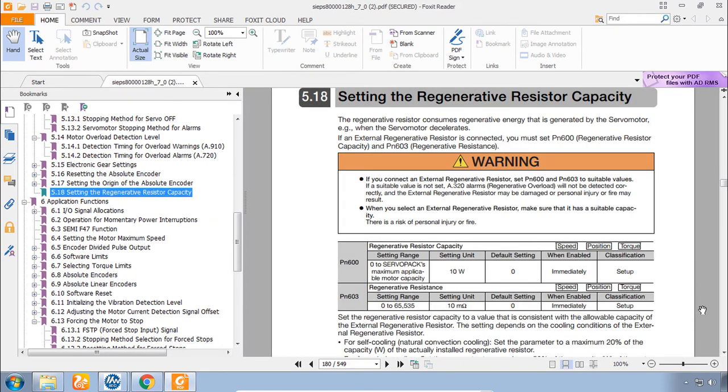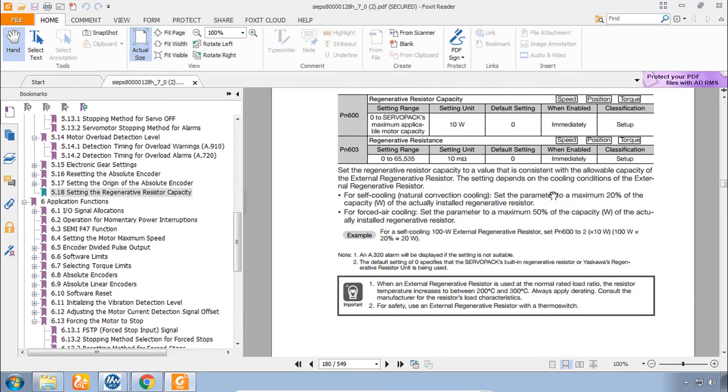And in the manual that is section 5.18, Regenerative Resistor Capacity. You see that PN600 is the wattage of, not the resistor necessarily, but of the capacity of the resistor. If you read through here you'll see that there's a 20% derating that we require for safety. And new for Sigma 7 is the parameter PN603, the resistance of that resistor in ohms. If you do have connected a regen resistor you need to consider these parameters in order to protect both the resistor and the amplifier.